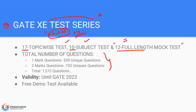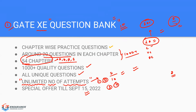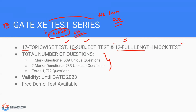One important thing to understand: the test series questions are completely different from the question bank questions. The question bank has about 1000 questions across 54 chapters, and the test series has approximately 1200 questions — all completely different. So overall, for GATE XC you effectively have more than 2000 questions for practice. We are very well versed in the GATE XC paper — we've been doing this for two to three years and our results speak for that.